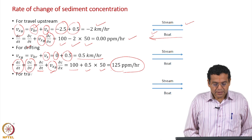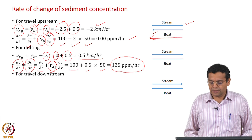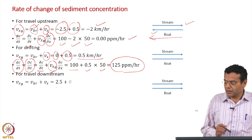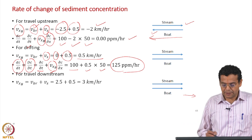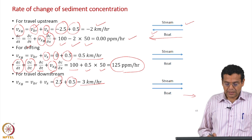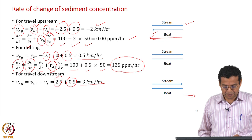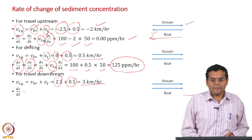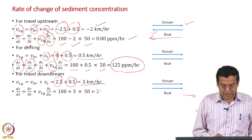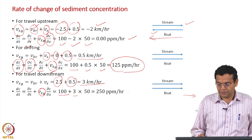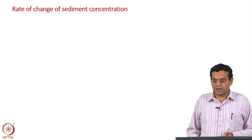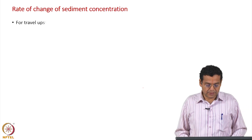For travel downstream, you travel along with the stream in your boat. The velocity of the boat relative to a stationary observer is +2.5 (boat moving in the positive x direction) plus the stream velocity 0.5, giving 3 kilometers per hour. Substituting: the rate of change of concentration is 100 + (3)(50) = 250 ppm per hour. So you observe different rates of concentration depending on the velocity at which you are travelling in the boat.